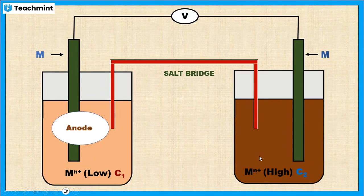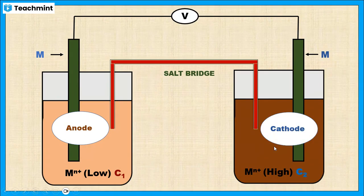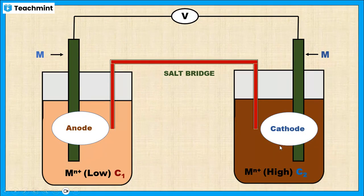The electrode with the higher concentration of the electrolyte acts as the cathode, because at a higher concentration the precipitation will be easier. Hence, the metal ions present in the solution will take the electrons and reduce to metal form — that is, reduction will take place.